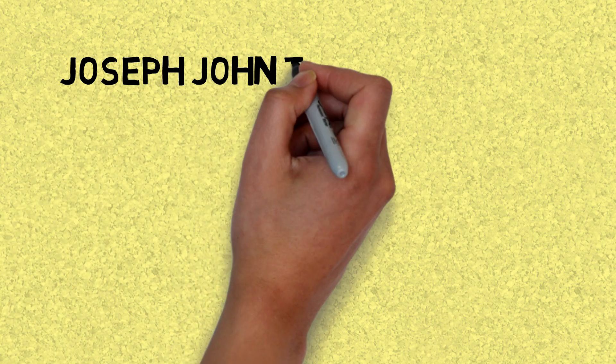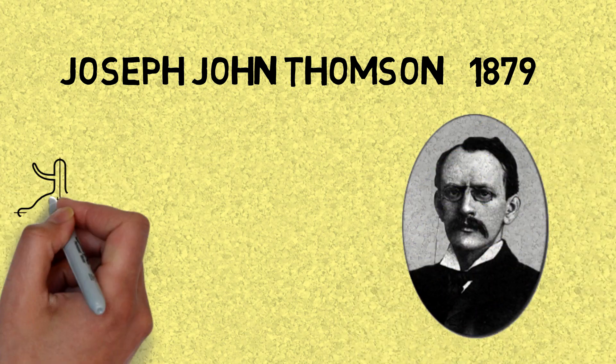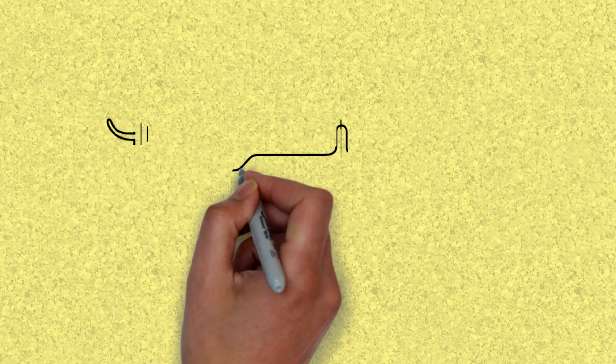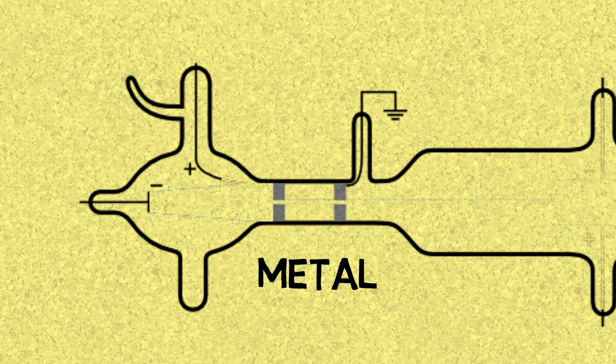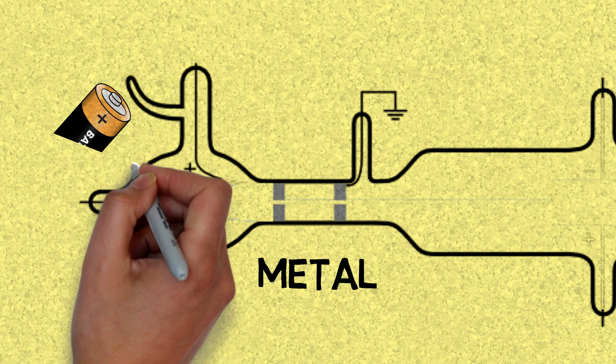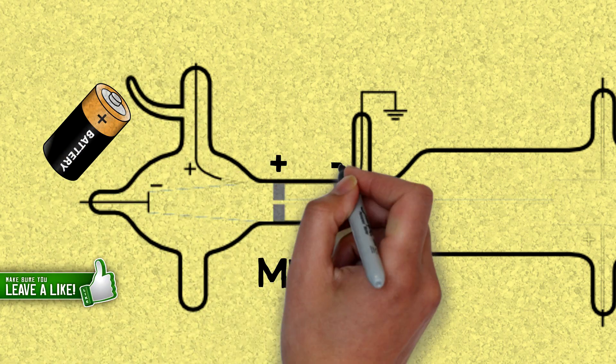In 1879, English physicist J.J. Thompson was experimenting with a cathode ray tube. The setup was basically two metal pieces inside a glass tube that had the air removed from it. He connected a power supply, one negative and the other positive, to the pieces of metal.